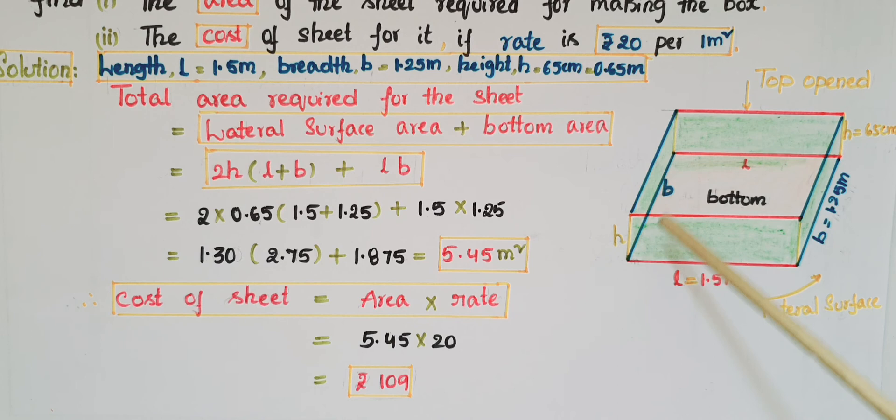Now we have to find the cost of the sheet. We know that cost of the sheet equals area times rate. So here, 5.45 × 20 equals 109 rupees.